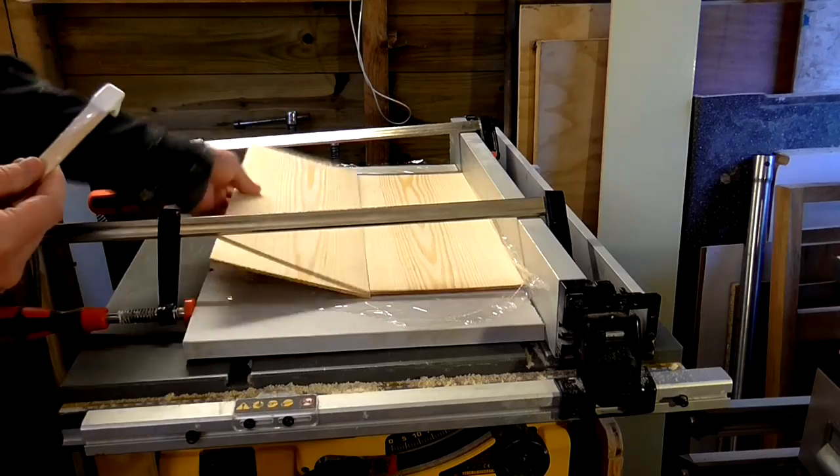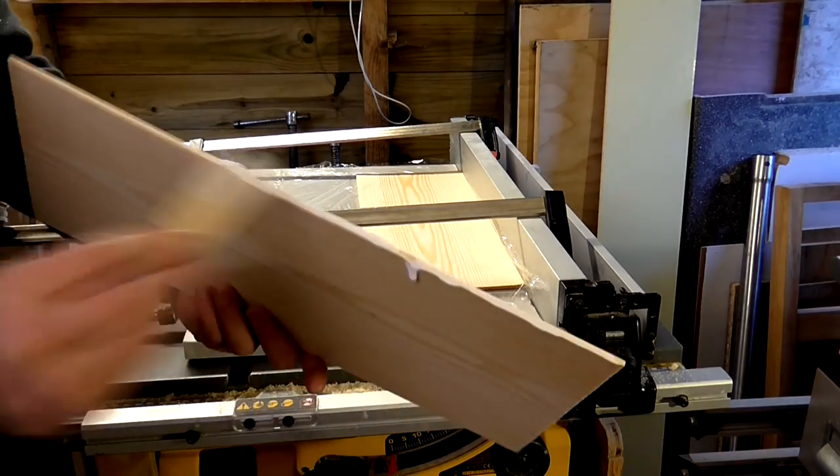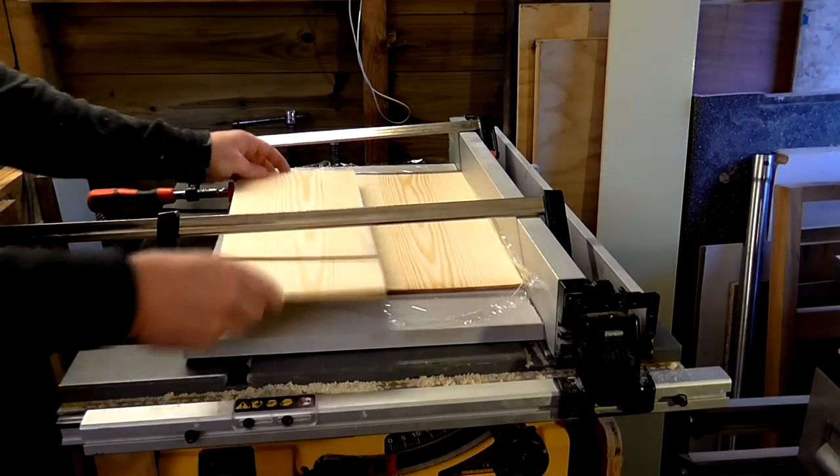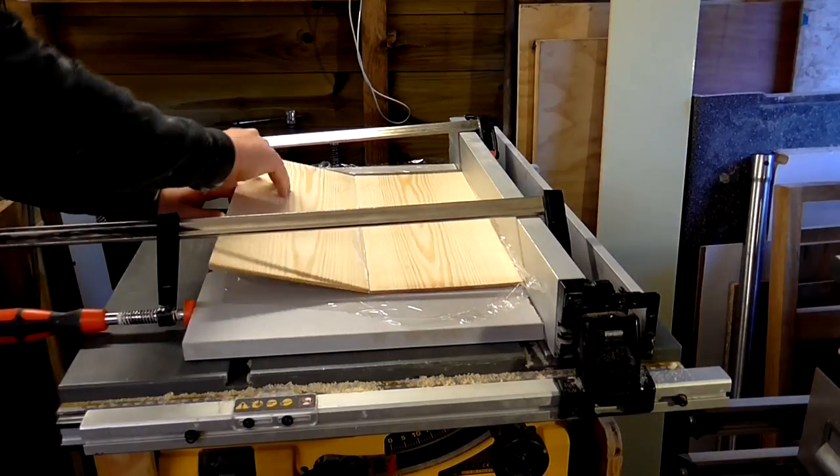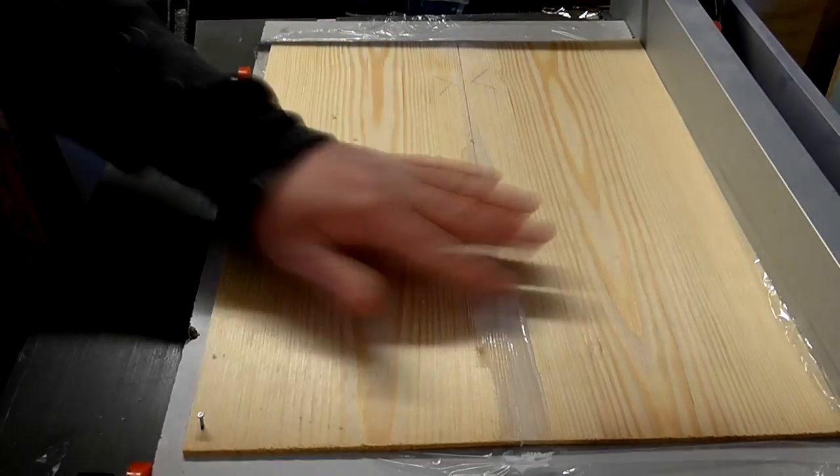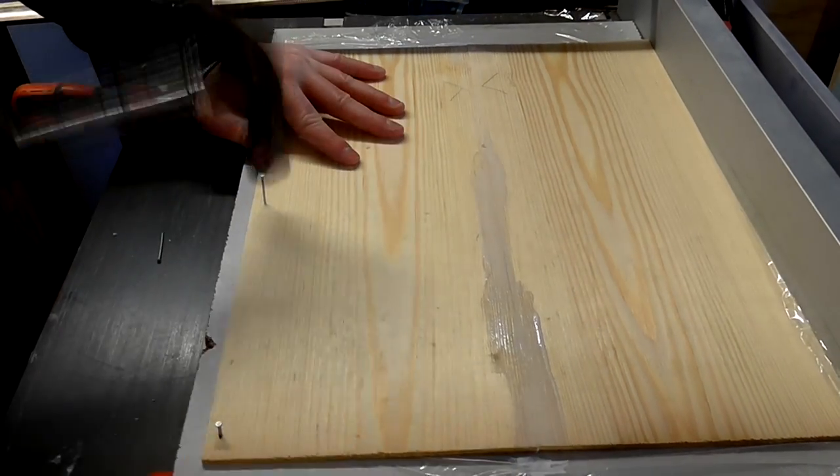I used some cling film to minimize glue mess on top of a straight piece of melamine for the glue up. Rather than using clamps on these flimsy pieces of wood to avoid breaking anything, I just applied pressure to the joint by hand before nailing it down to secure the joint nice and tight.